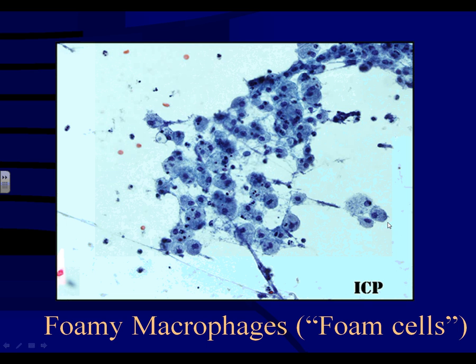Foam cells are multivacuolated macrophages that are not uncommon in a breast FNA, especially in those with cystic change. They're just typical foamy macrophages you've seen at other sites — in the breast we refer to them as foam cells.